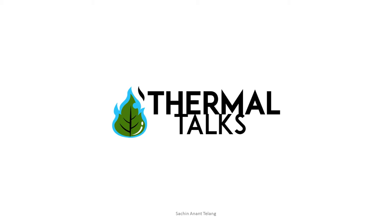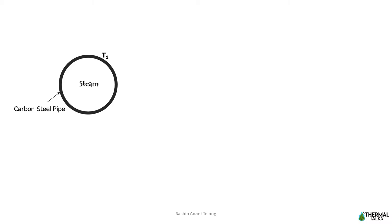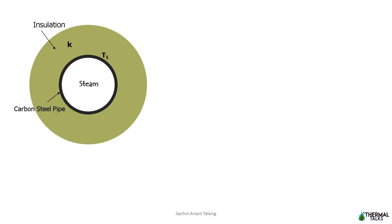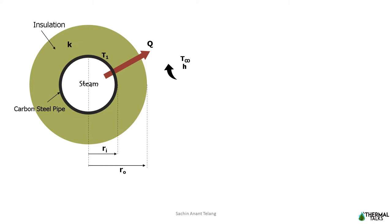Namaste friends, I welcome you all to my YouTube channel Thermal Talks. Let us consider a carbon steel pipe carrying steam whose temperature is maintained at temperature T1 throughout its length. An insulation of thermal conductivity K is provided, whose inner radius is Ri and outer radius is Ro. Heat is transferred from hot steam to surrounding air through the pipe and insulator.